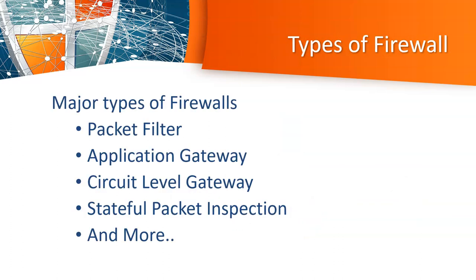So far we understand what a firewall is and where it is located in the network diagram. Now let's look at the types of firewalls available in the market. Most people have already seen a firewall in their operating system. The firewall we have on a Windows PC is called a packet filter firewall, or screening firewall, or basic-level firewall. That's the first and most basic type.